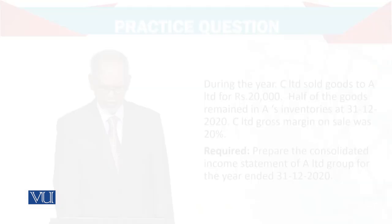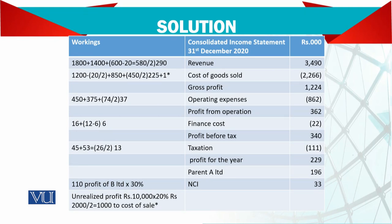Let's see how this arrangement is handled. If you look at the working: A's full figures, B's full figures, and C's 50% — but before that, the unrealized profit of 20% is subtracted. Similarly for revenue, cost — you proceed line by line. For two figures we take them in full, but for one figure we take 50% because your share in it is 50%.